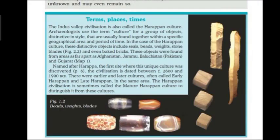The Indus Valley Civilization is also called Harappan Civilization or Harappan Culture. Archaeologists use the term 'culture' to mean a group of objects distinctive in style, found together within a specific geographical area and period of time. Harappan culture's distinctive objects include seals, beads, weights, stone blades, and large bricks. These objects were found across parts of Afghanistan, Jammu, Balochistan, Pakistan, and Gujarat. This civilization was named after the first city discovered — Harappa — and dated between 2600 and 1900 BCE.